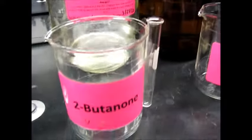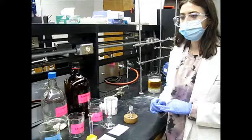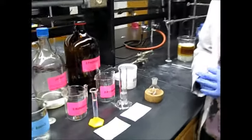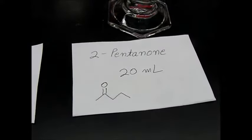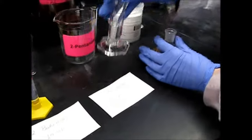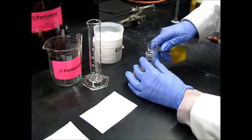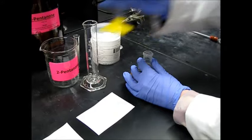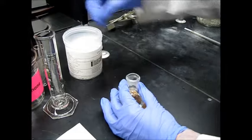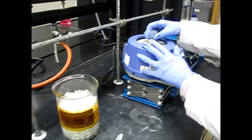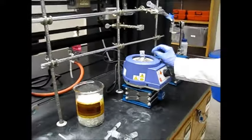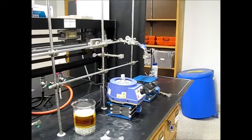The compounds we'll be using are 2-butanone and 2-pentanone. The mixture we will distill today is 10 milliliters of 2-butanone and 20 milliliters of 2-pentanone. We add that to our round-bottom flask, then add about 2 boiling stones, place it in the apparatus, and we will pack the Hempel column with the glass beads.